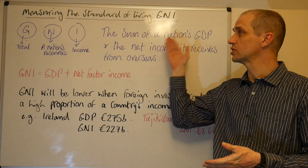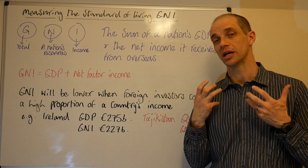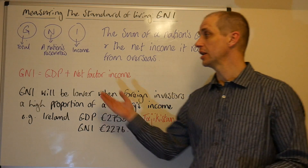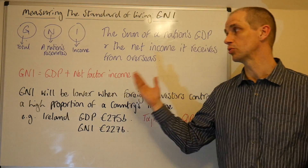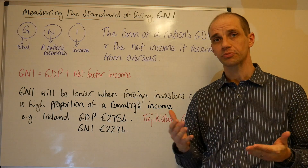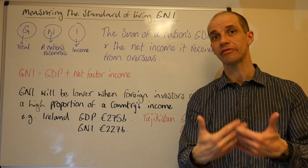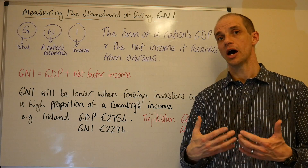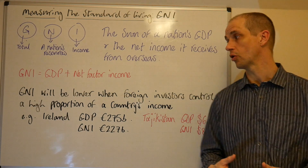The sum of a nation's GDP and the net income it receives from overseas is a good definition for what GNI actually reflects, and it can be broken down to a very simple calculation: GNI equals GDP plus net factor income. Now this can be negative of course, so you might have more money leaving your domestic economy rather than actually coming home, depending on the economy's makeup.